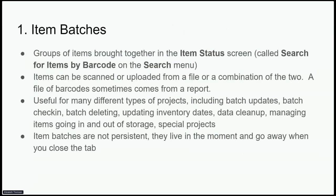An item batch is a group of items brought together in the item status screen, also called 'search for items by barcode' on the search menu. Items can be scanned, uploaded from a file, or a combination of the two — and a file of barcodes often comes from a report. They're useful for many different types of projects: batch updates, batch check-in, batch deleting, updating inventory dates, data cleanup, managing items going in and out of storage. Item batches are not persistent — they live in the moment and go away when you close the tab.